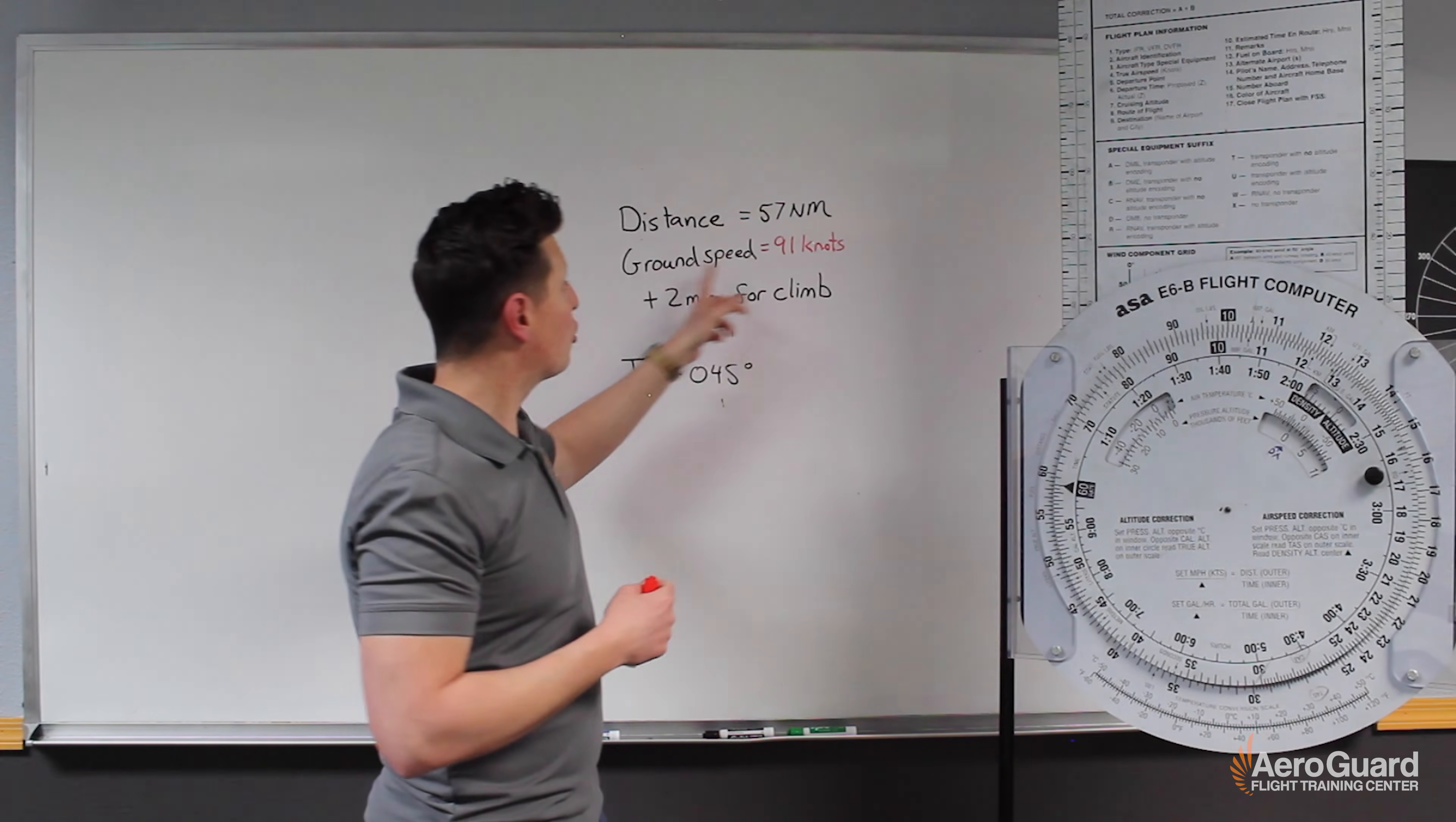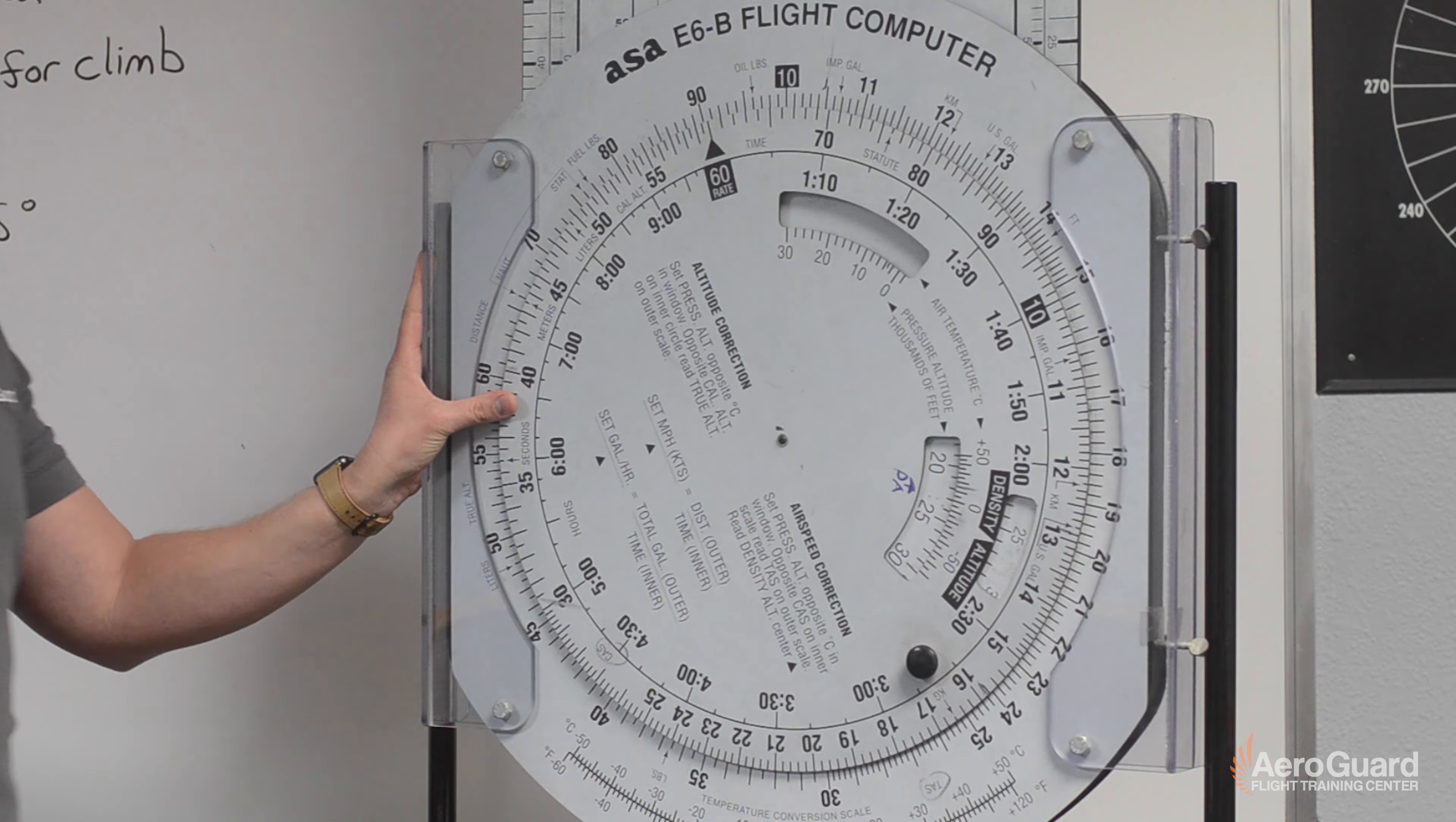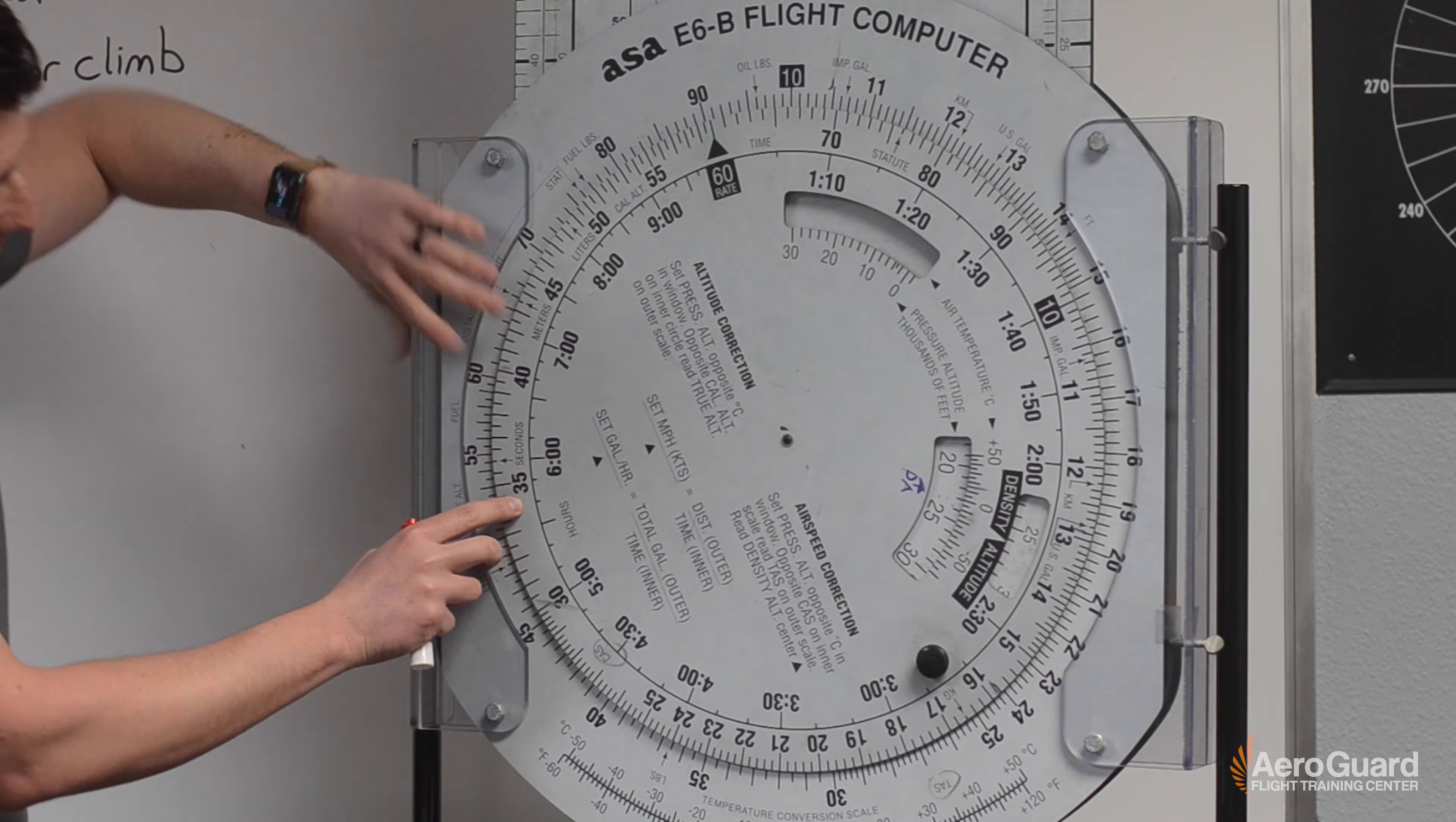So in this case our ground speed is 91 knots. There's our black triangle. There's 91 knots. That looks set to me. Now we need to find according to the instructions the distance on the outer ring. So in this case 57 which is about where my thumb is here.